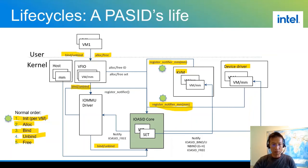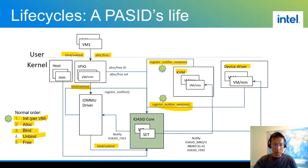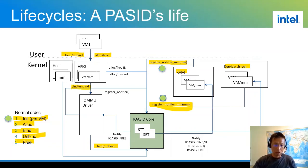The teardown is just a reverse process: initiated from the VM to do an unbind, passed down to the IOMMU driver to perform the unbind, and then KVM or device driver is notified. For example, when KVM gets notified it will clear its PASID table entry for that particular PASID. We also implement a reference counting mechanism to make sure PASID life cycles are clearly aligned — not until the last user drops its reference will the PASID be returned to the pool for reallocation.